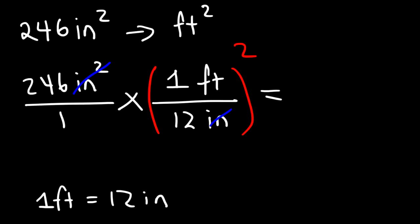So it's going to be 246 divided by 12, which is 20.5. Take that result, divide it by 12 again. And you should get 1.7083 square feet. And so that's how you can convert units of area from one unit to another unit.